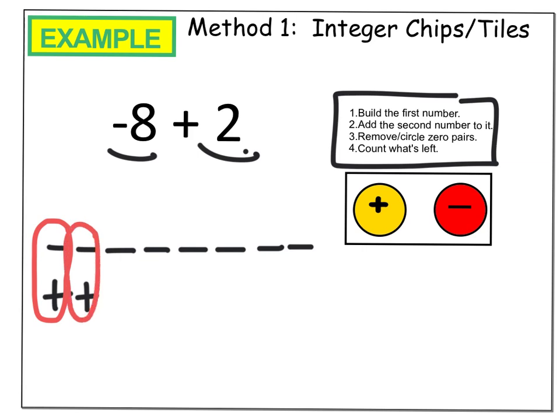Well, my second number is 2, so it's a positive 2, so I'm going to add two positives. Then it tells me over here to remove or circle my zero pairs. Well, a zero pair is when you have a positive and a negative because they cancel each other out and make zero. So there's a zero and there's a zero, and I just count up what's left to see what my answer is. 1, 2, 3, 4, 5, 6, but I notice that they're negatives, so my answer is negative 6.